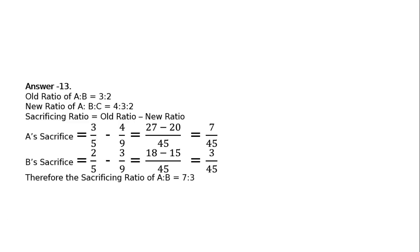Therefore, the sacrificing ratio of A is to B is equal to 7 is to 3.